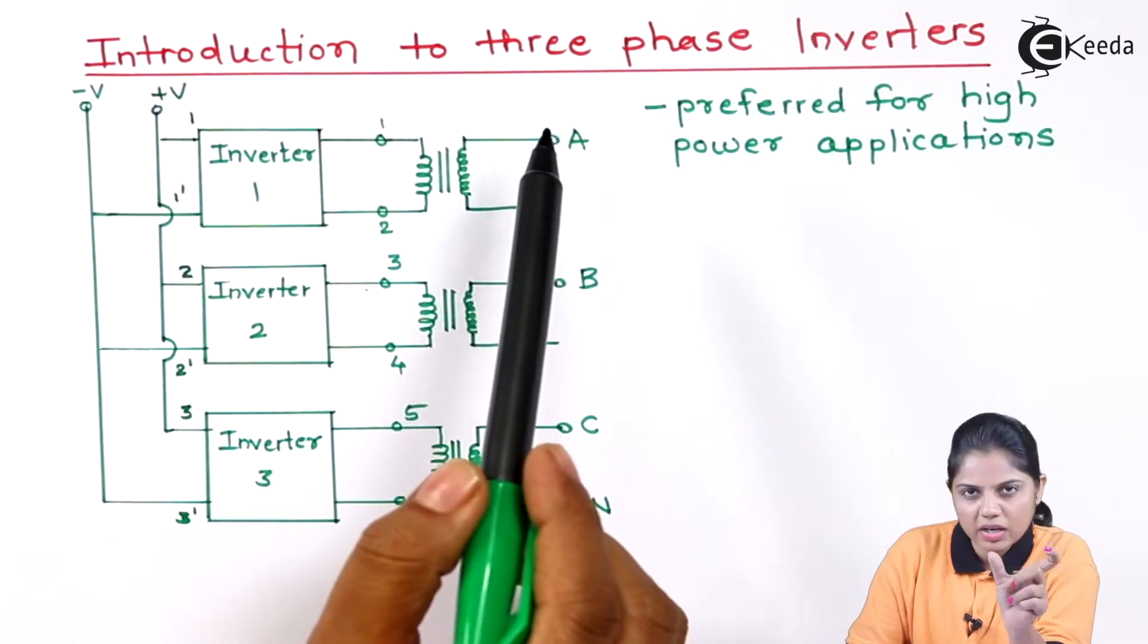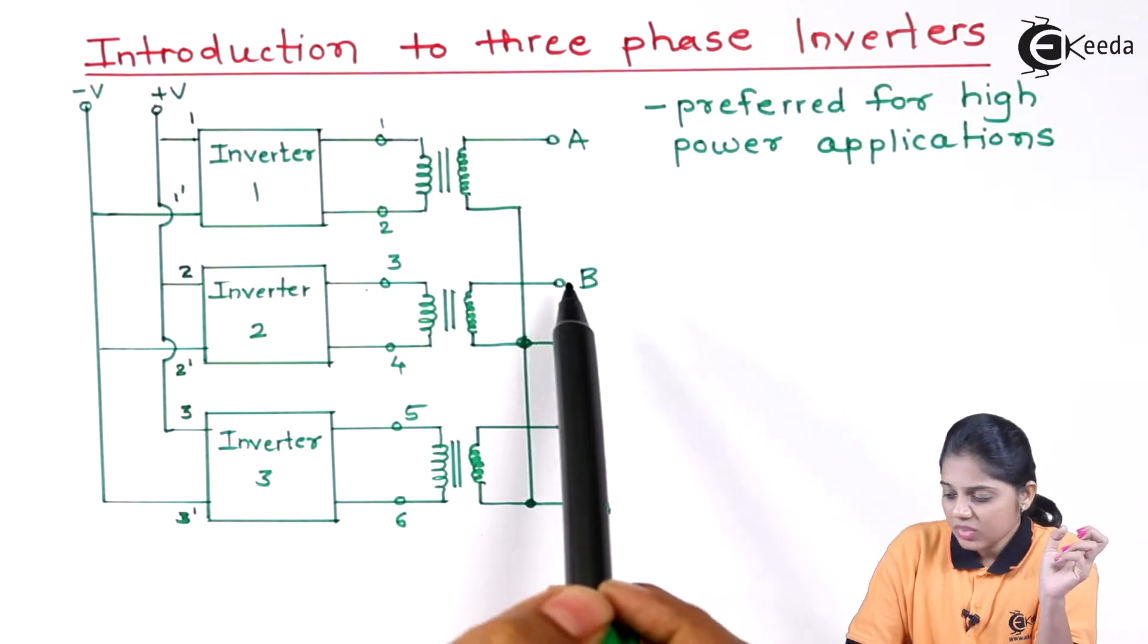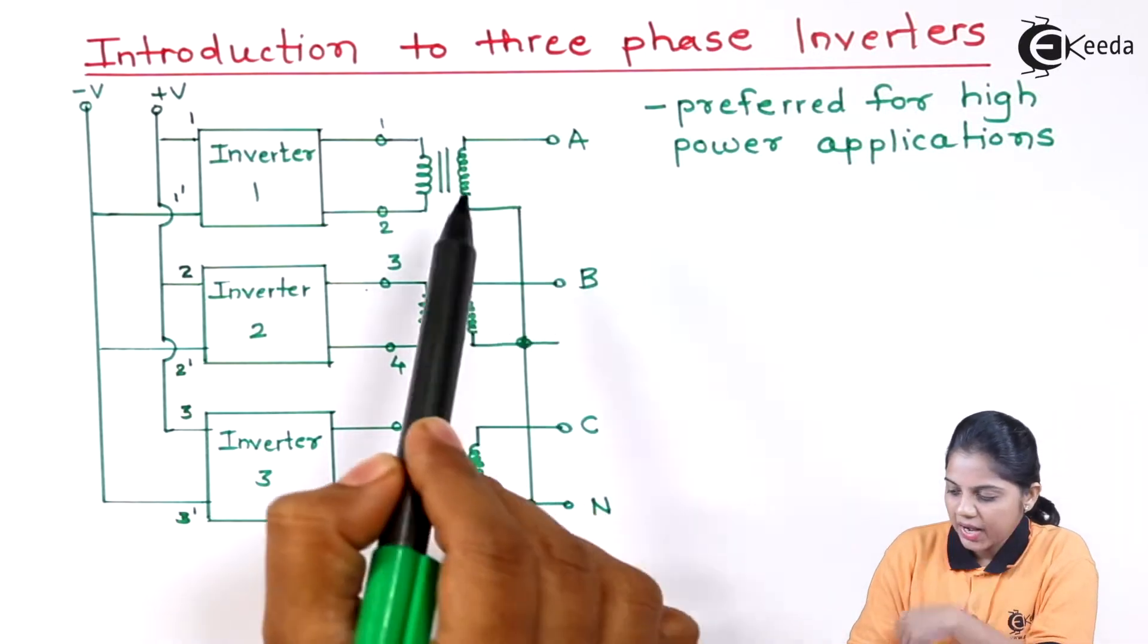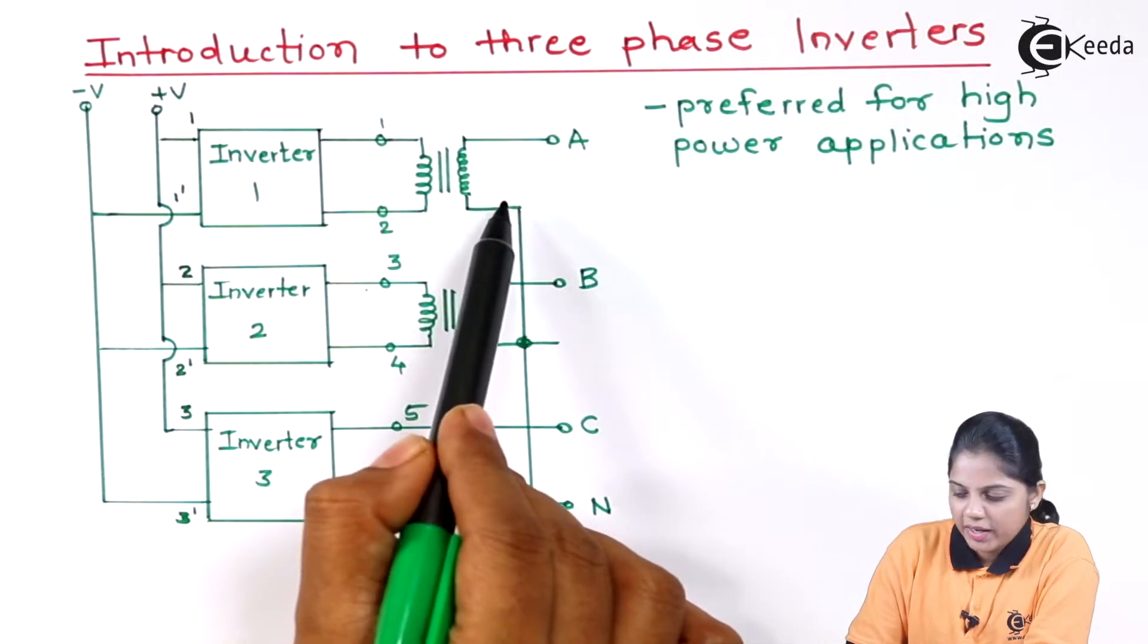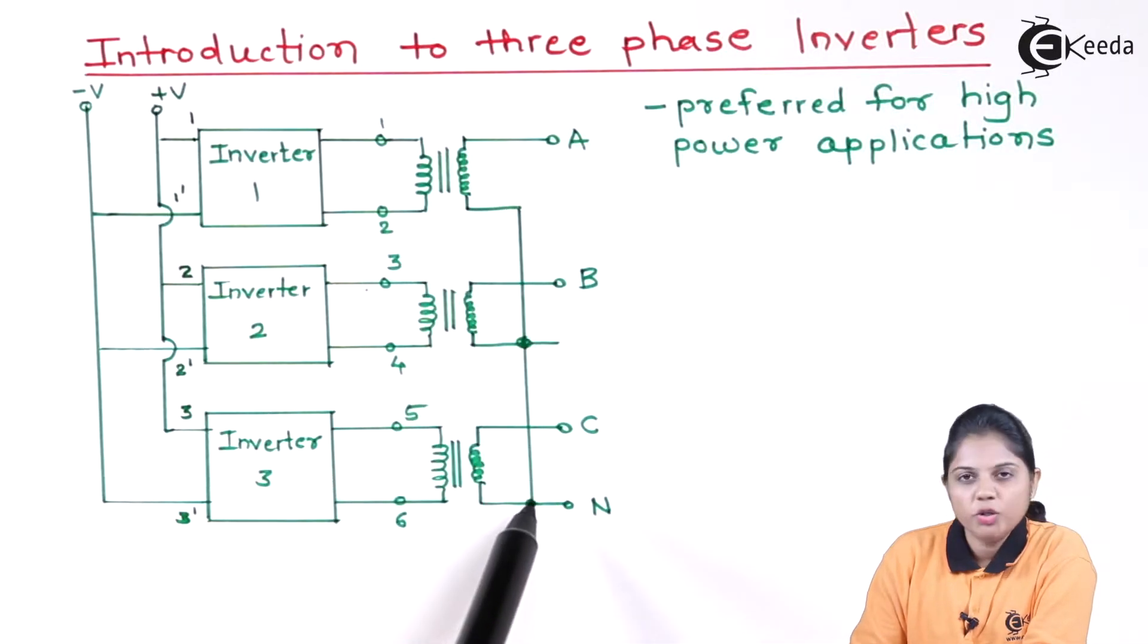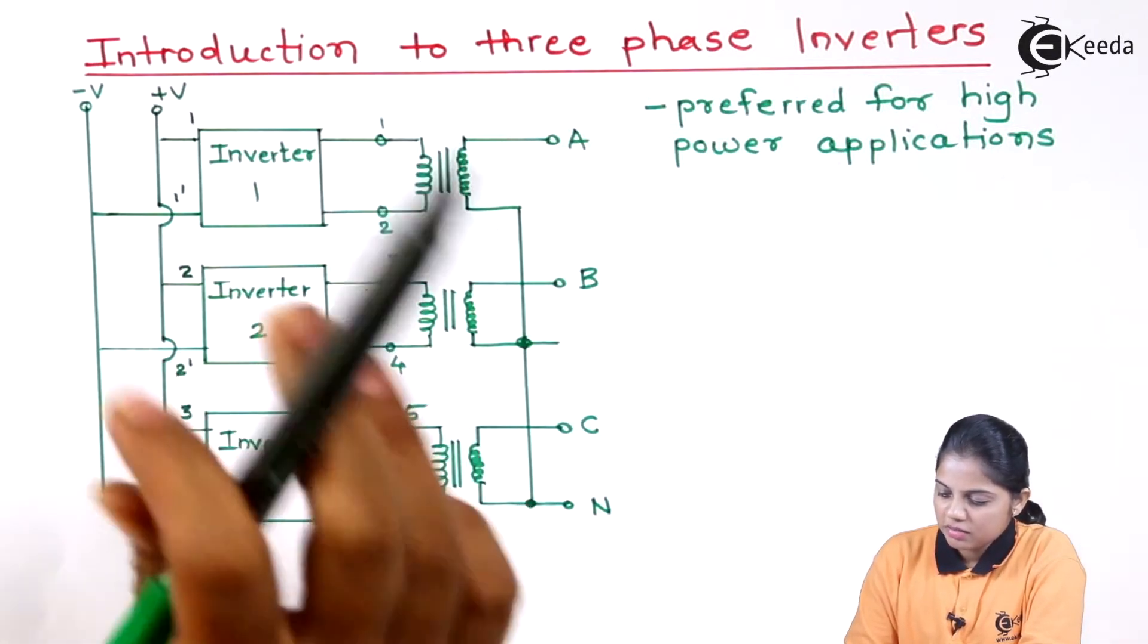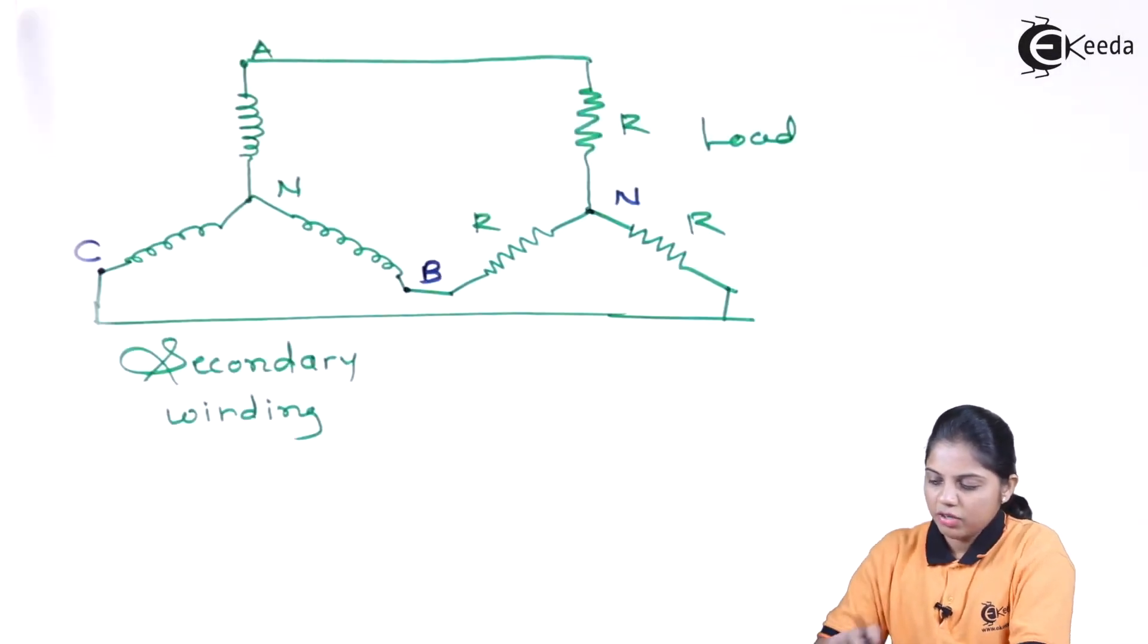Basically A is a load connected with one pair, B is a different load, and C is a different load. And one terminal of the secondary winding is connected to the neutral. If you see this diagram in a different way, your diagram will look like this.